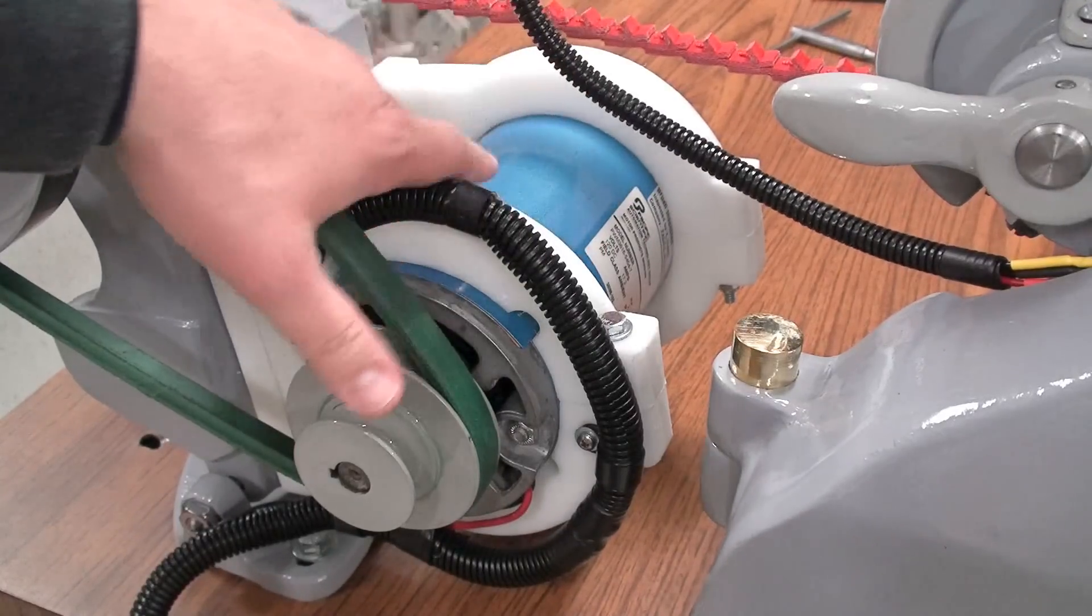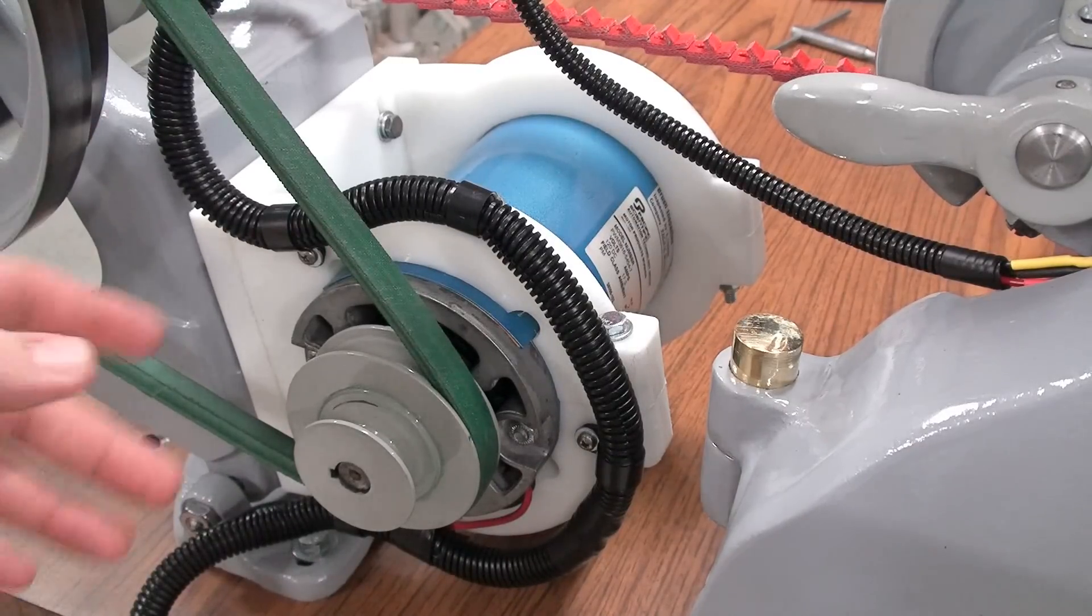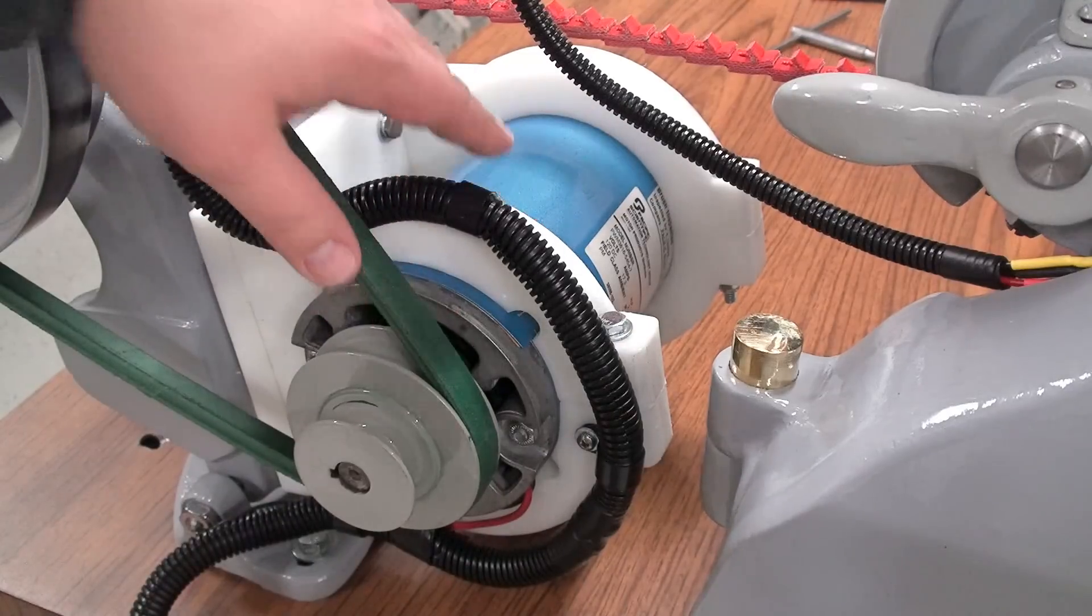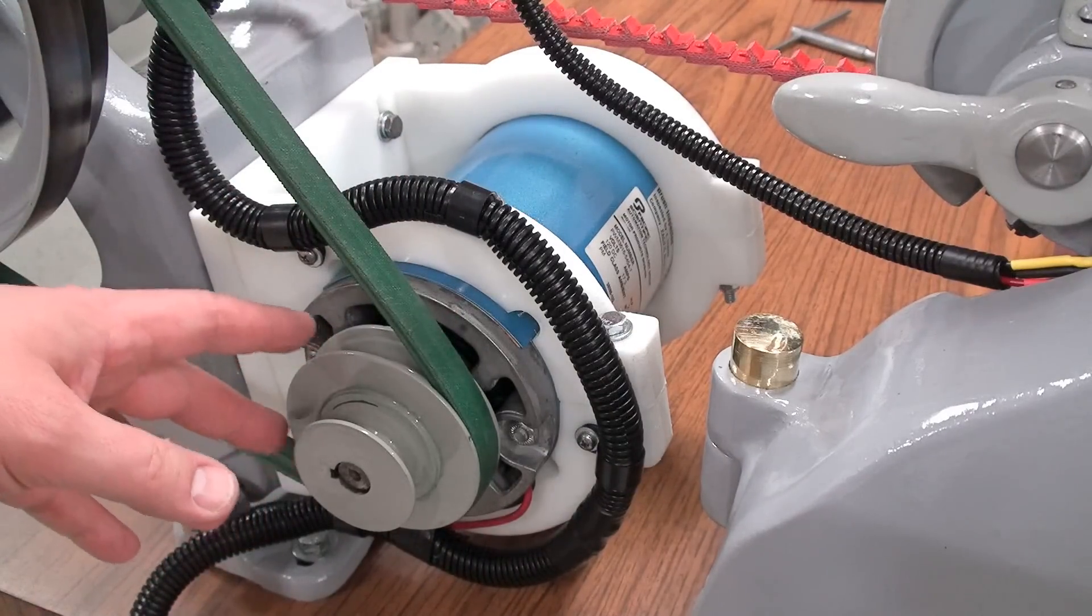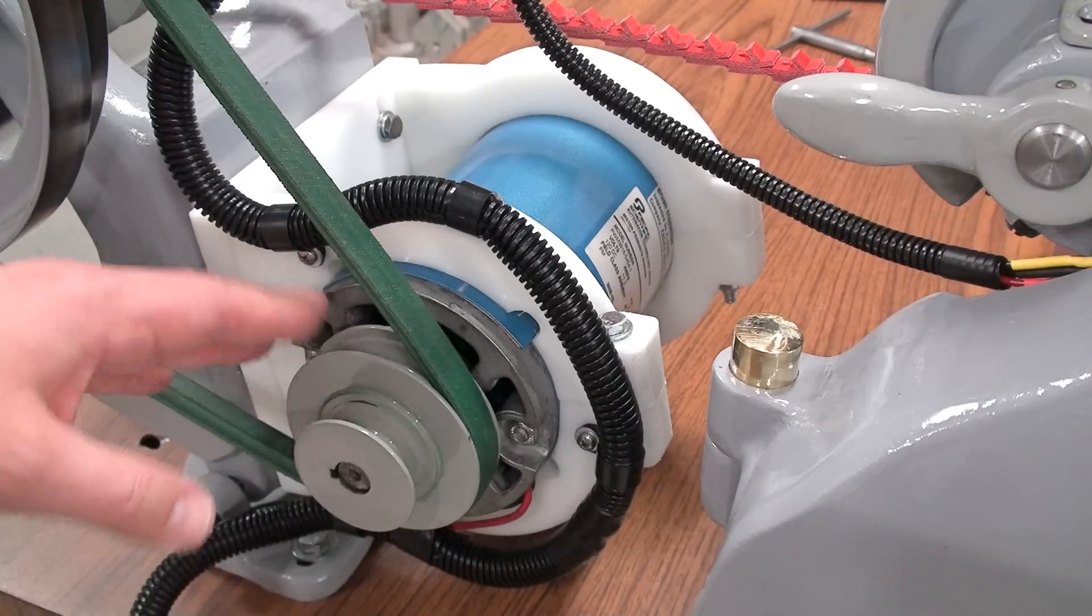I got this DC motor off of eBay. It's a Pacific Scientific, probably a 20, 25-year-old motor. It's 3 horsepower, continuous duty, 120 volt. I took the pulley off of the old motor and I put it on here, matched perfectly.